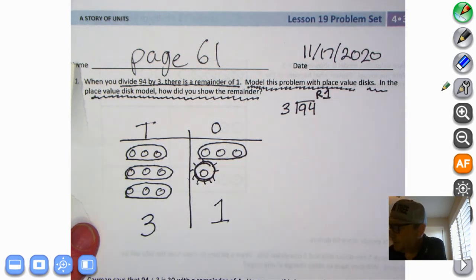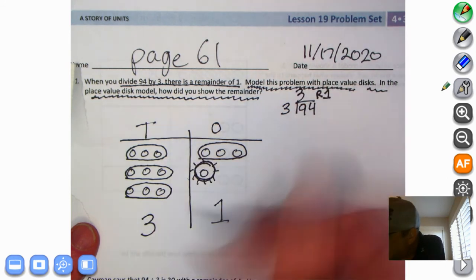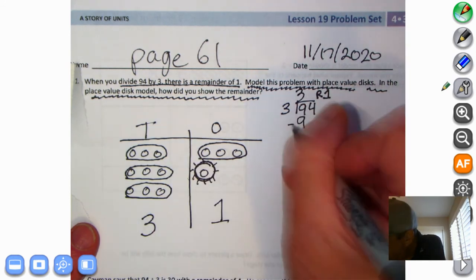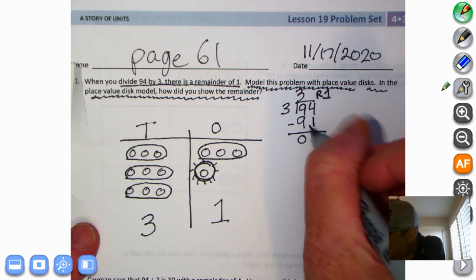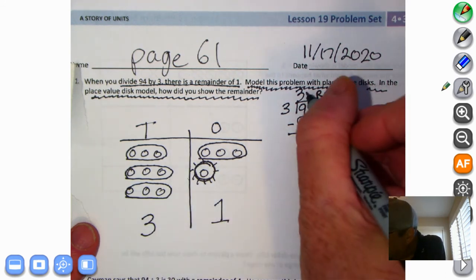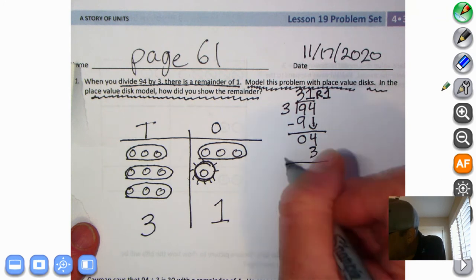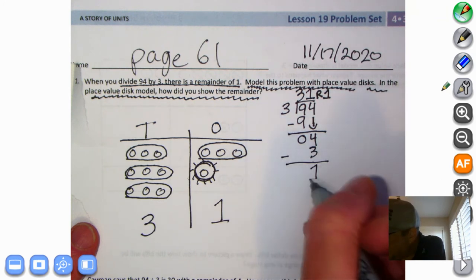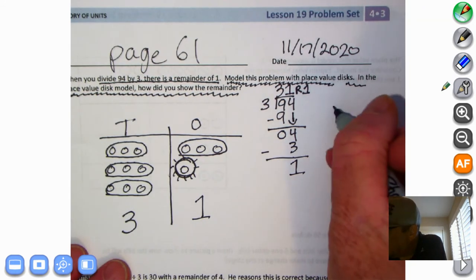Let's go to the standard algorithm. 3 times 3 right here is what? 3, 6, 9. We subtract 9 minus 9 is 0, we bring down the 4. 3 times 1 is 3 and we're ready to subtract. Look at that, 4 minus 3 is 1 and there's our remainder 1.